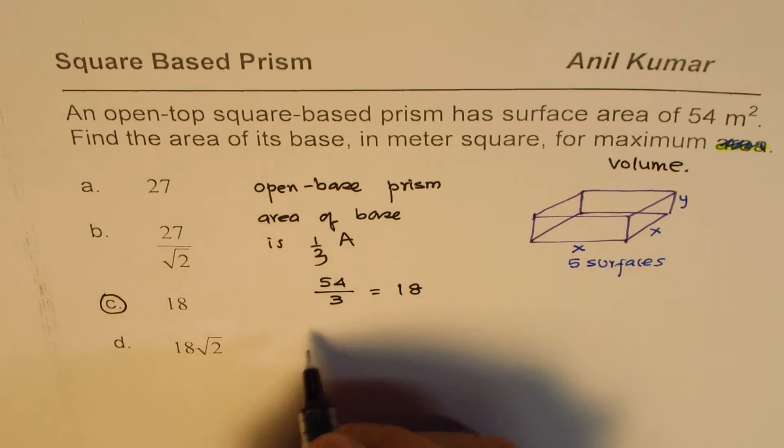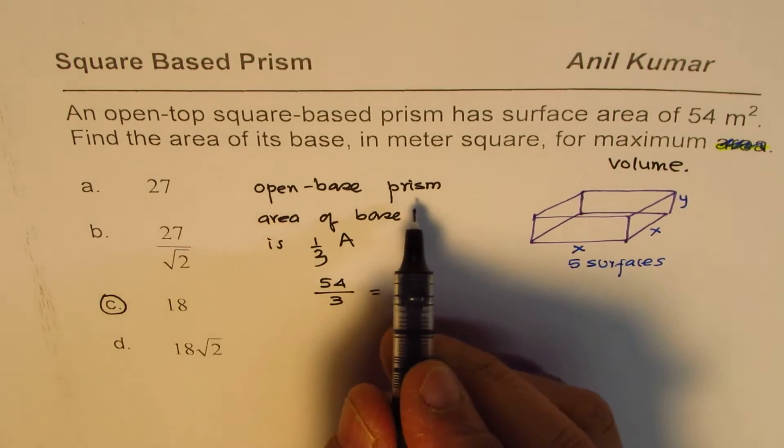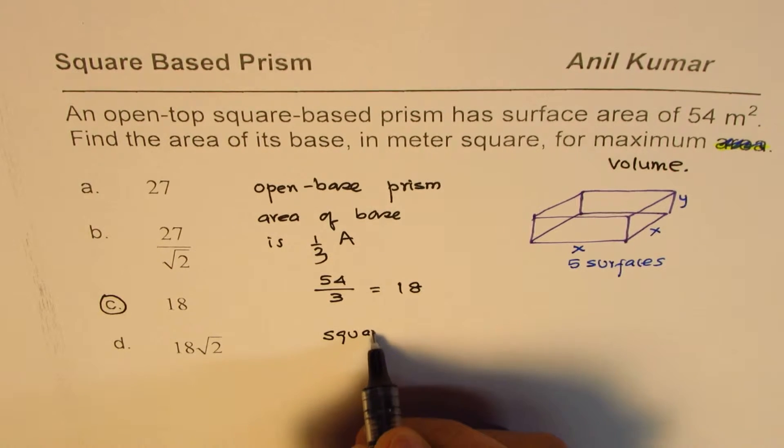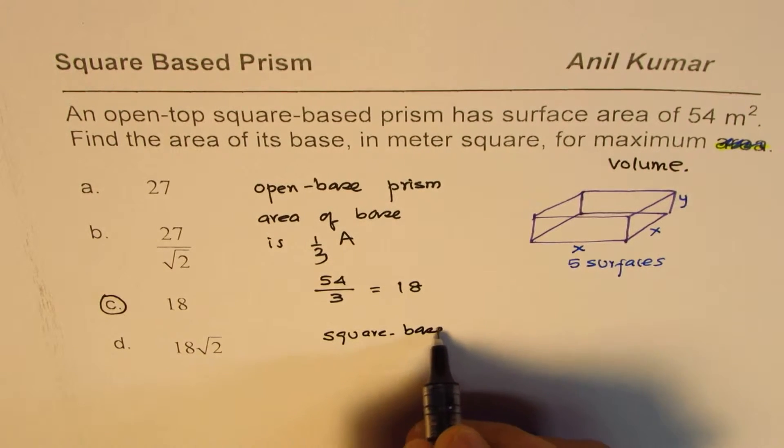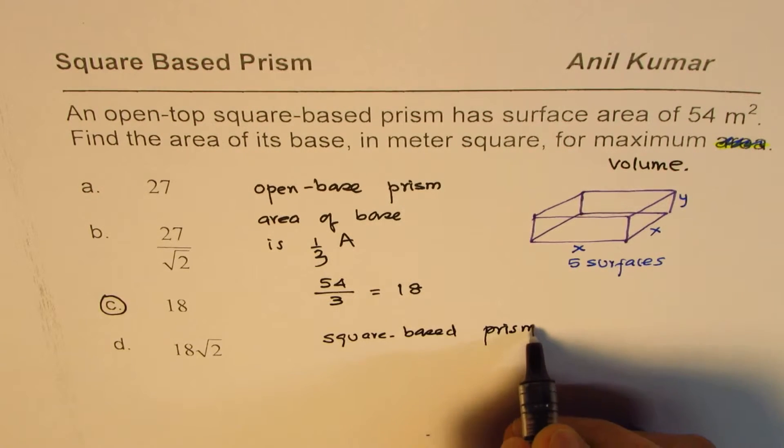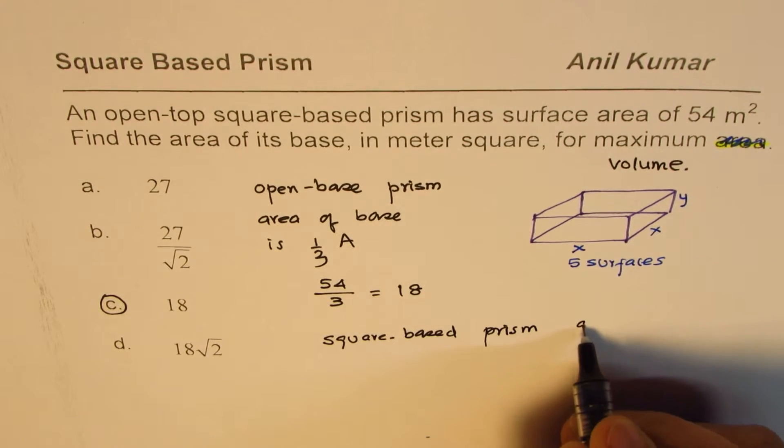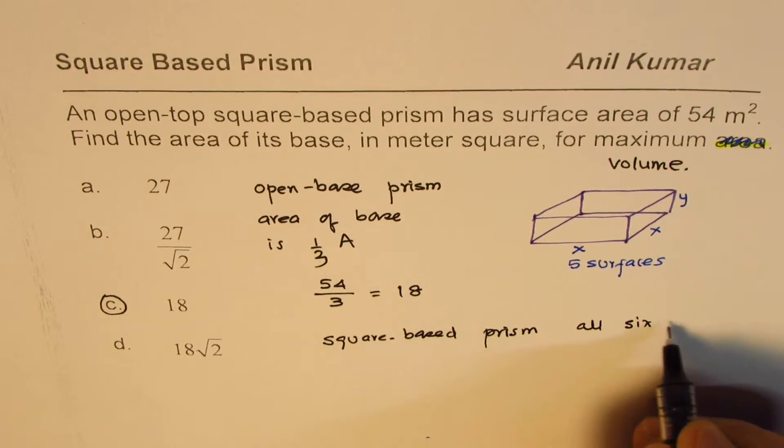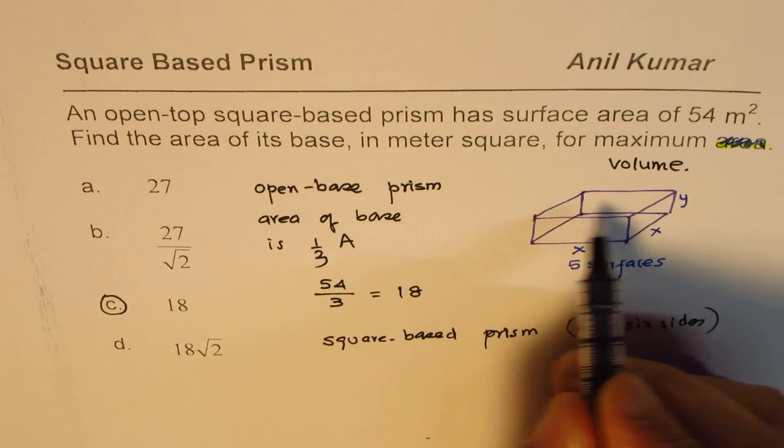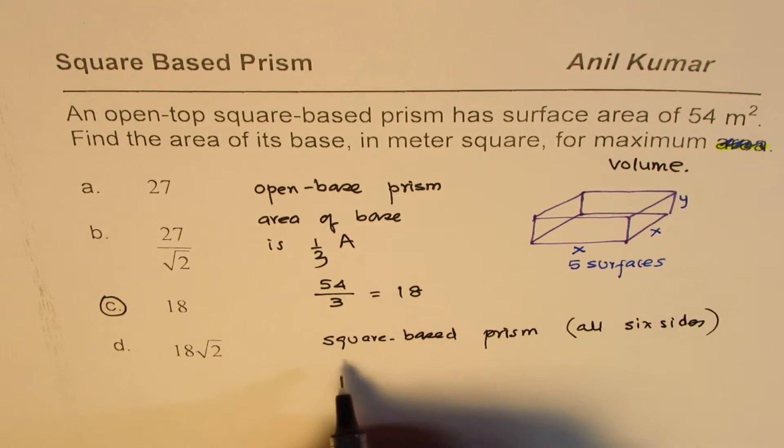In case you have a square-based prism which is not open-base—if you have a square-based prism with all six sides, that means with the top—in that case, area of base is one-sixth.